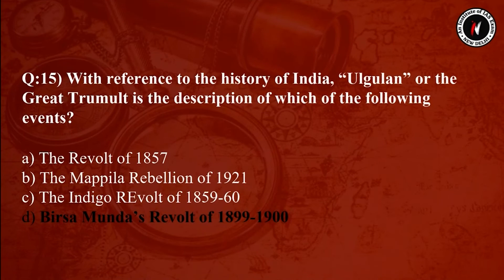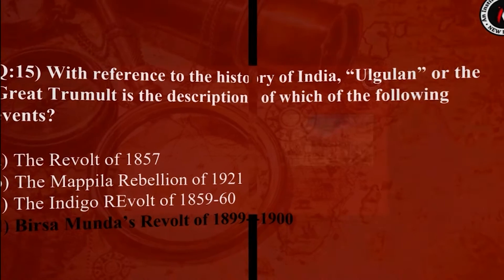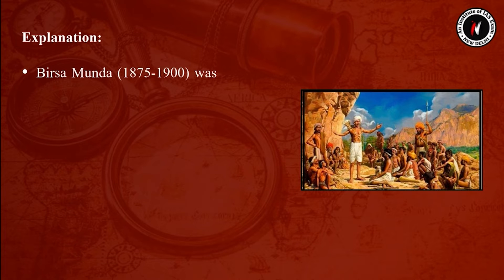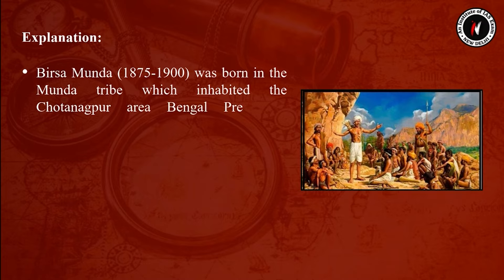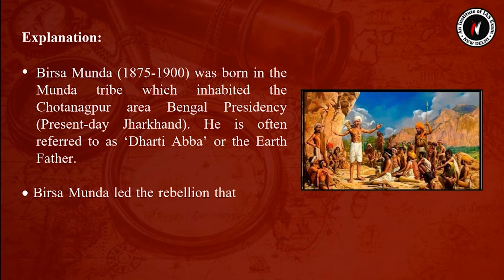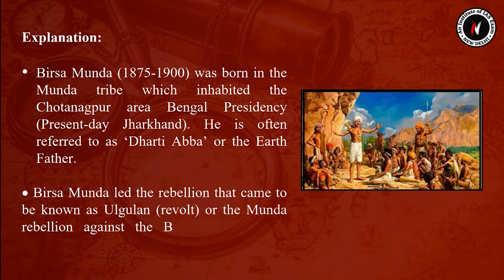The answer is Option D. 'Ulgulan' or 'The Great Tumult' is the description of Birsa Munda's revolt of 1899–1900. Birsa Munda was born into the Munda tribe which inhabited the Chota Nagpur area of Bengal Presidency, present-day Jharkhand. He is often referred to as 'Dharti Abba' or the Earth Father. Birsa Munda led the rebellion that came to be known as Ulgulan or the Munda Rebellion against the British-imposed feudal state system.